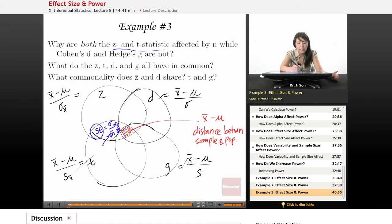So what commonality does Z and D share? Well, that's going to be right in here, right? So what do they have in common? They both rely on actually having sigma. T and G both rely only on the sample's estimate of the population standard deviation. So it looks a little messy, but hopefully this makes a little more sense. Alright. Thanks for using educator.com for effect size and power.